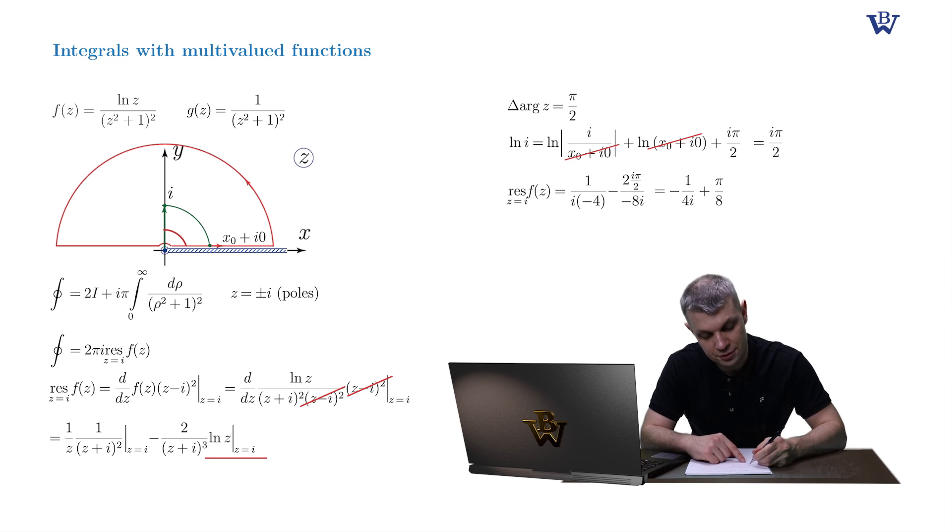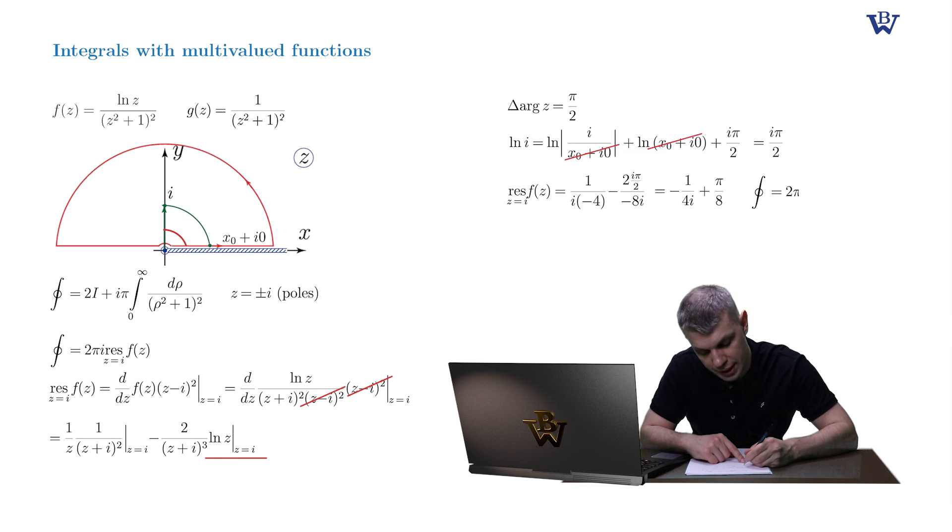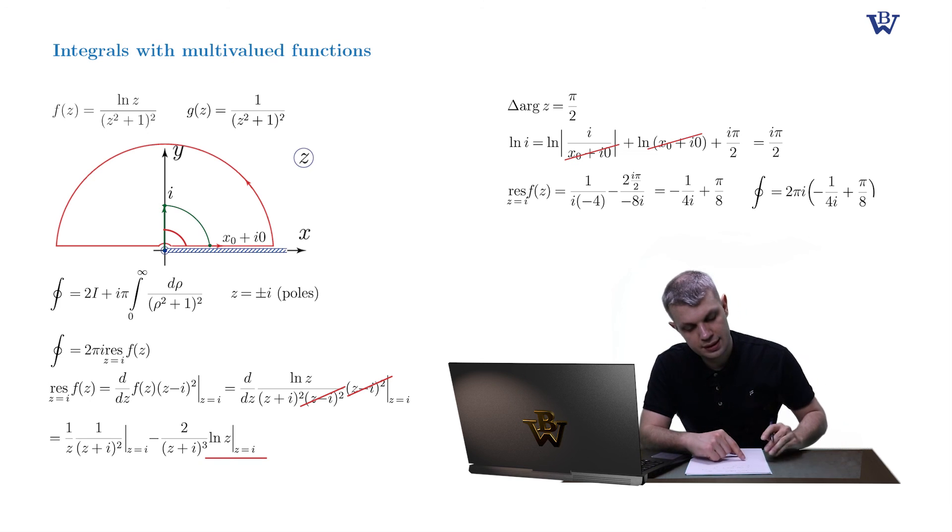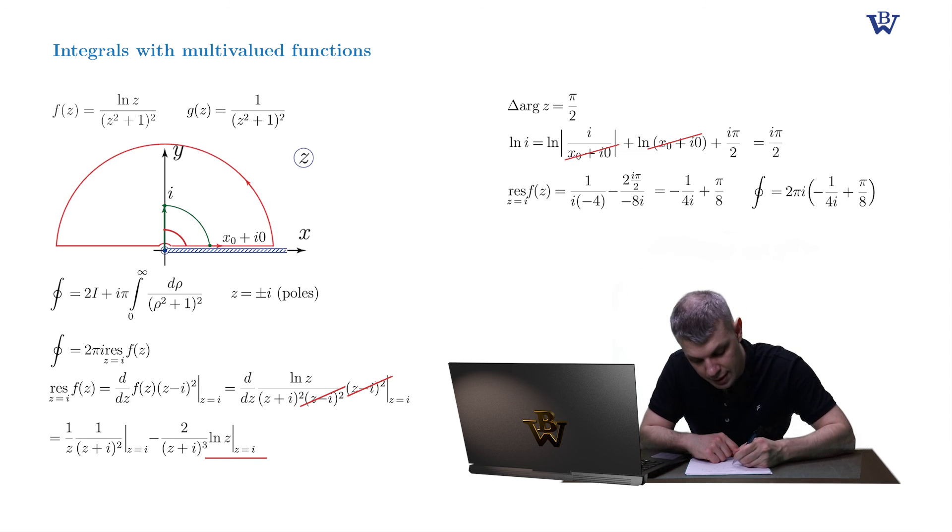And as a result, our closed contour integral is given by the following complex number: 2 pi i times the following bracket. So it's simply pi squared i by 4 minus pi by 2.